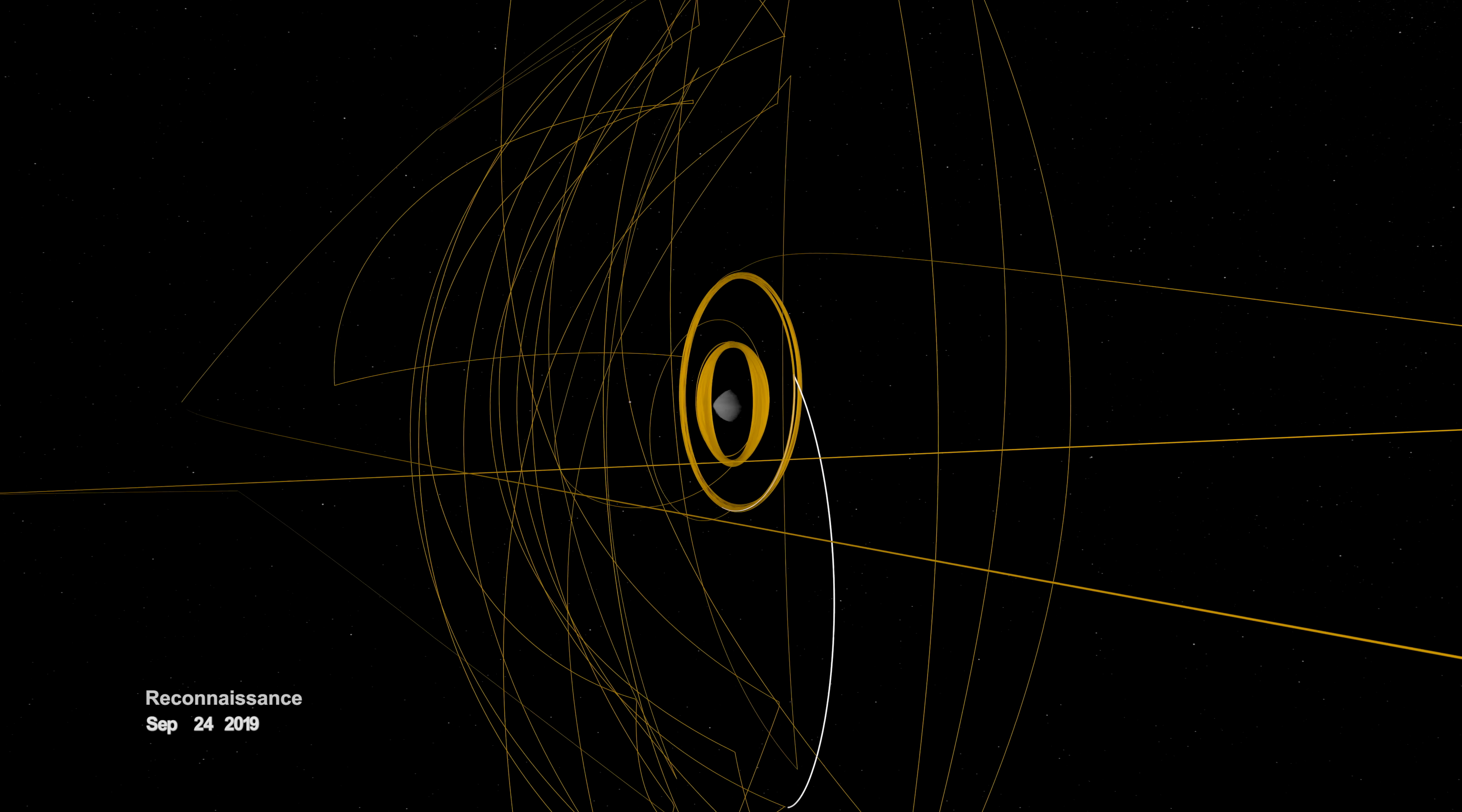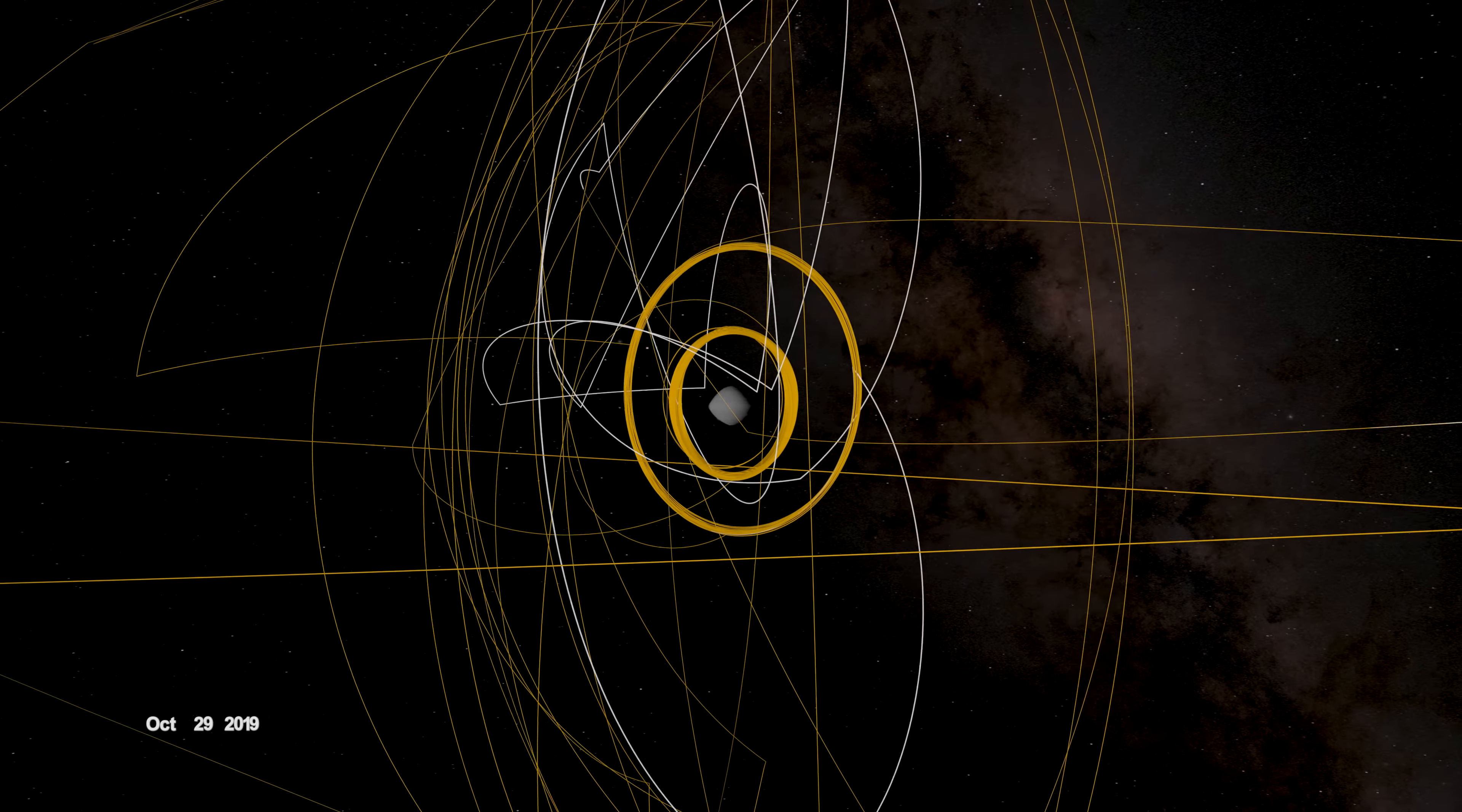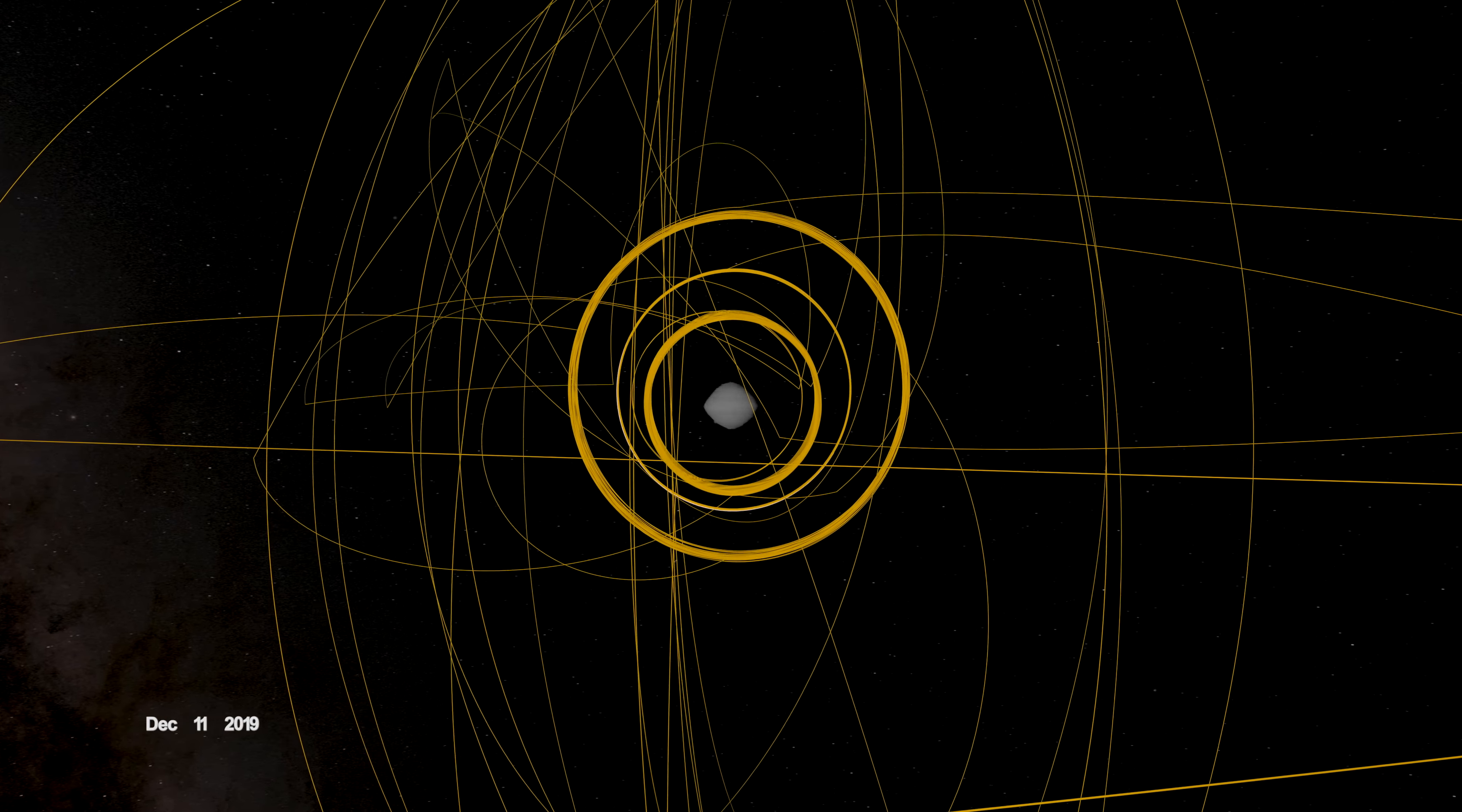In September, it began reconnaissance on four candidate sample collection sites, potential locations on Bennu to touch down and collect a sample later in the mission. OSIRIS-REx concluded its first year at Bennu back in orbit, circling the asteroid's terminator, or boundary, between day and night.